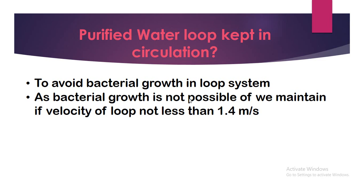First of all, the basic reason is to avoid bacterial load in the loop. We keep the purified water loop in circulation. If the velocity of the loop is not less than 1.4 meters per second, then bacterial growth is not possible. This is why we maintain the purified water loop at 1.4 meters per second or keep it in circulation.